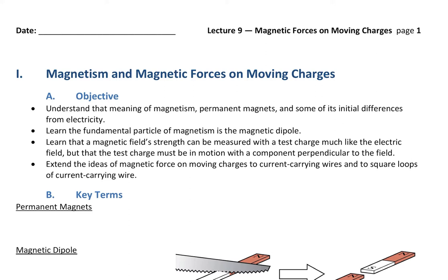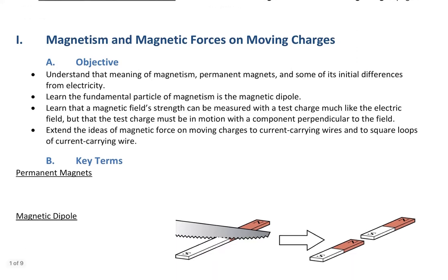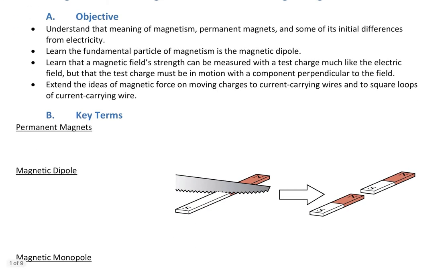We want to learn that the fundamental particle of magnetism is the magnetic dipole. We want to learn that a magnet's field strength can be measured with a test charge, much like the electric field, but that the test charge must be in motion with a component perpendicular to the field. We want to extend the ideas of magnetic force on moving charges to current-carrying wires and to square loops of current-carrying wire, which will create magnetic torques.